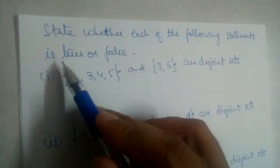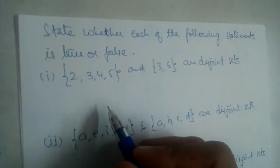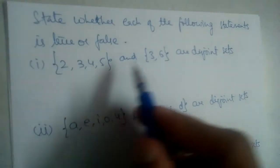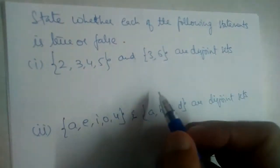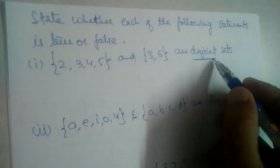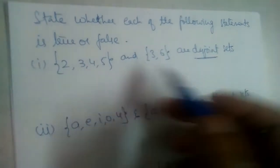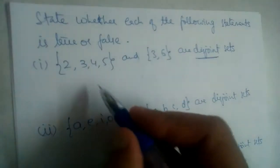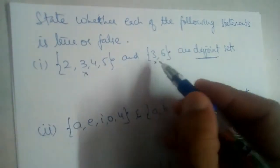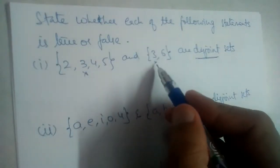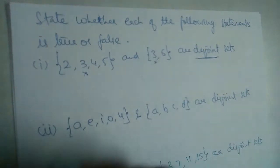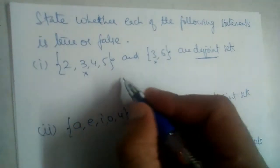State whether each of the following statements is true or false. First one: {2, 3, 4, 5} and {3, 6} are disjoint sets. What are disjoint sets? Disjoint sets are sets in which no element should be common. So check whether these two are disjoint or not. See, 3 is common—3 is present in the first set, 3 is present in the second set. So do you think these are disjoint sets? No, they are not.